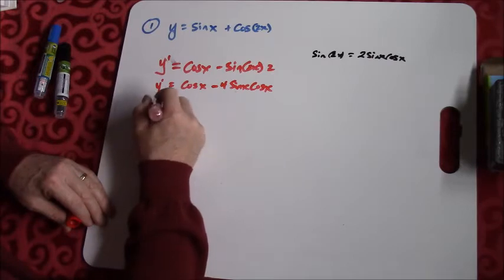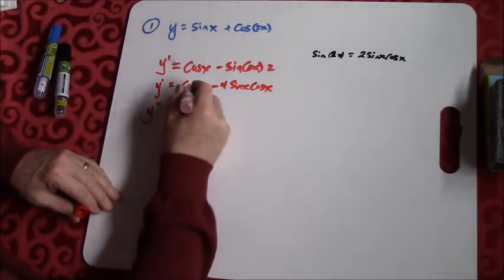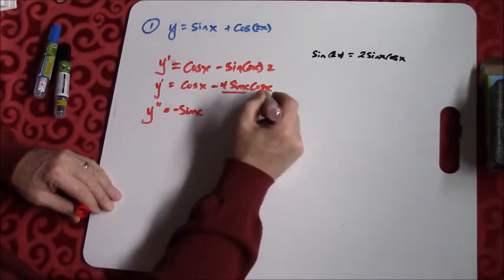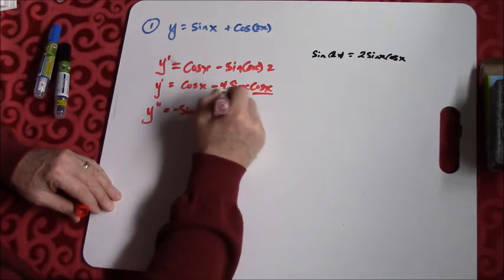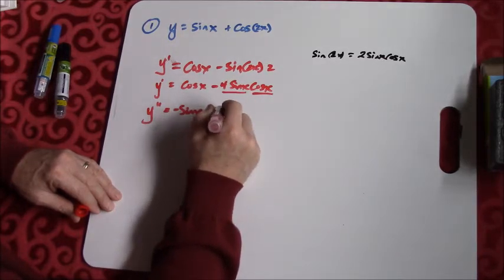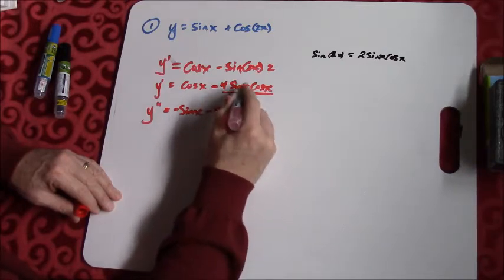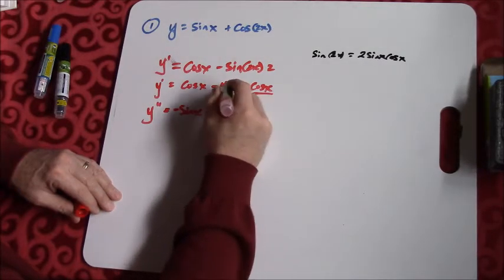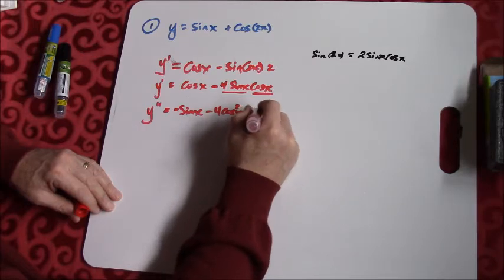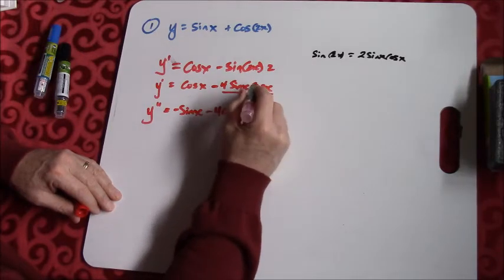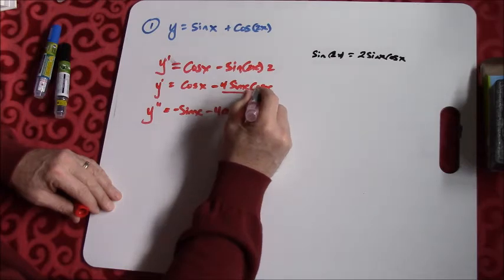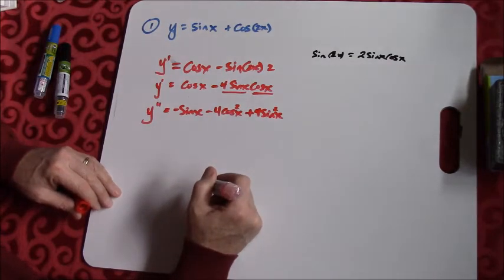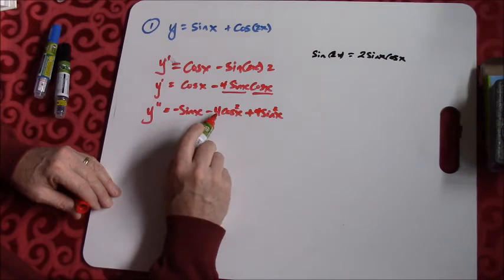Now I need the second derivative. Taking the derivative of y prime, the first term gives negative sine of x. For the product rule on the second term: derivative of the first piece gives negative 4 cosine of x times cosine x, so cosine squared. Then leave the first piece, minus 4 sine of x, times the derivative of cosine x which is negative sine of x — that makes it positive — giving sine squared.